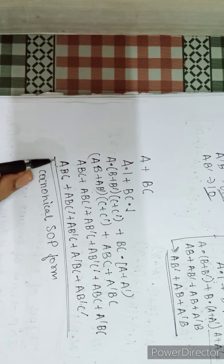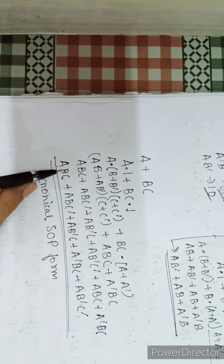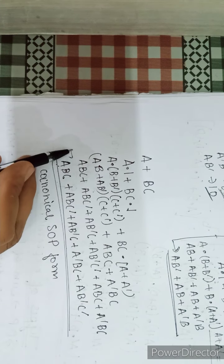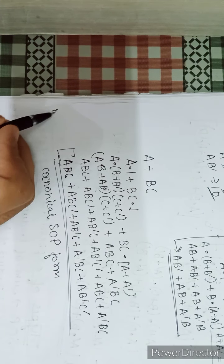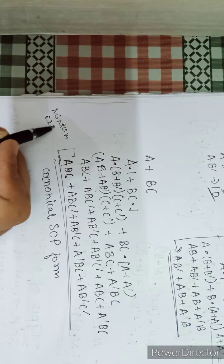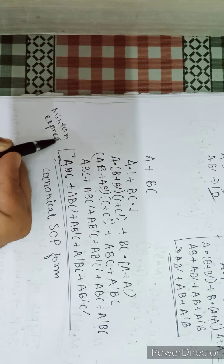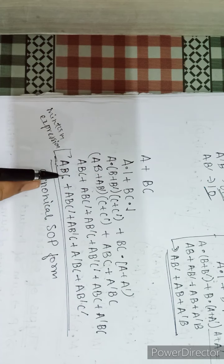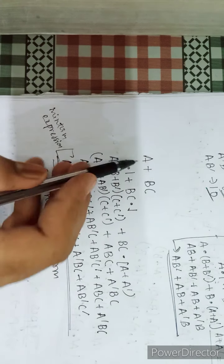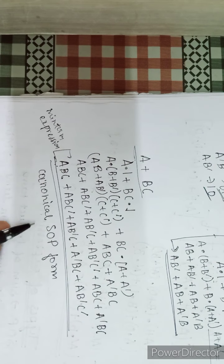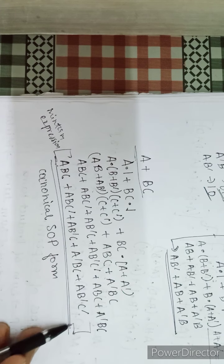Each term in this expression can be called a min term, and this expression is also known as a min term expression. In your exam it can be asked in two ways: convert it into its min term expression, or convert it into its canonical SOP form. This will be the desired answer.